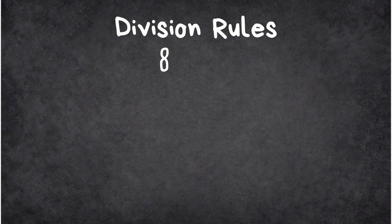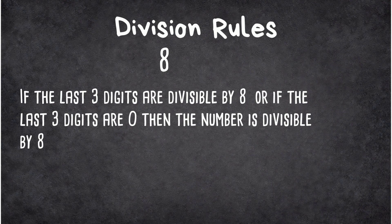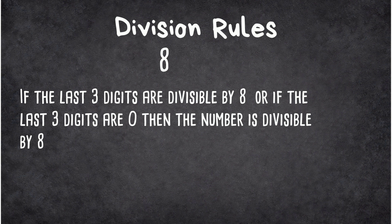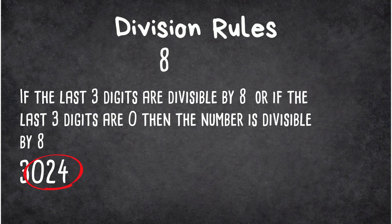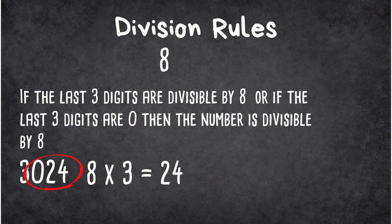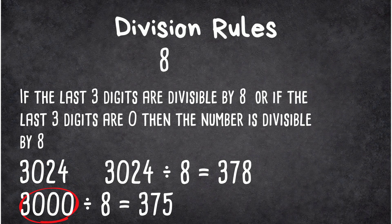And now, a little out of order, the divisibility rule for 8: if the last three digits are divisible by 8, or if the last three digits are 0s, then the number is divisible by 8. For example, 3024: the last three digits, 024 or 24, is divisible by 8. So 3024 divided by 8 equals 378. And then 3000 ends in three 0s, so it's divisible by 8, and that equals 375.